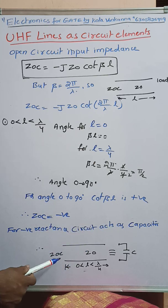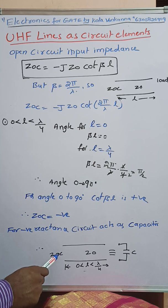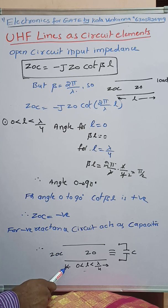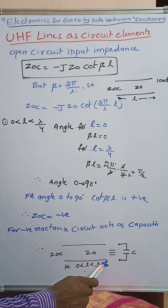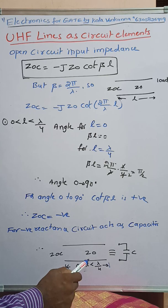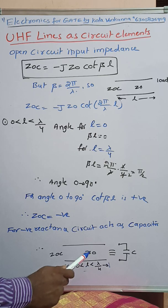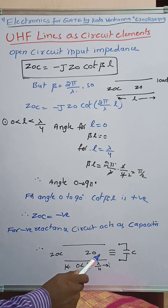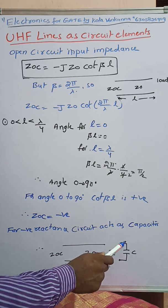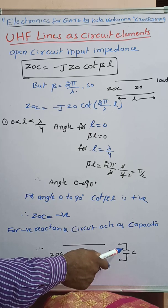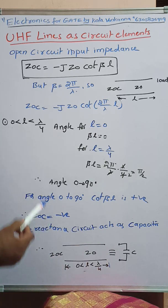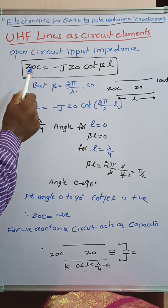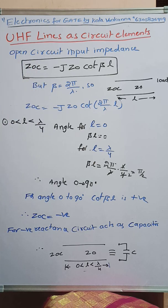So for negative reactance, the circuit acts as a capacitor. When the open circuit input impedance Z_OC is negative and the length of the transmission line is between 0 and λ/4, the UHF open circuit transmission line acts as a capacitor.